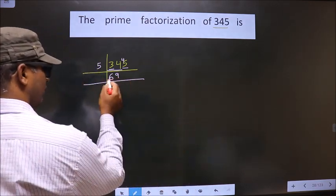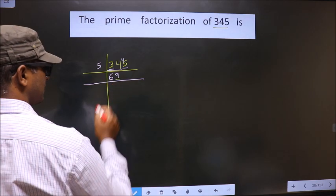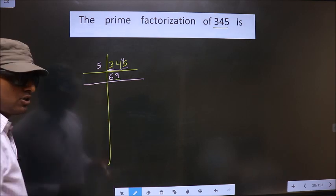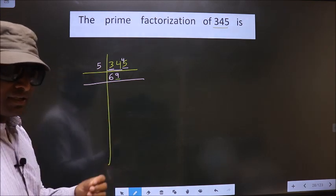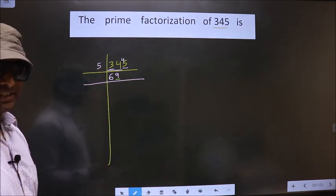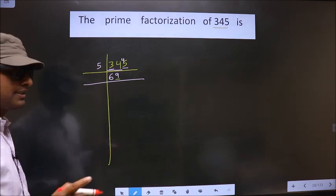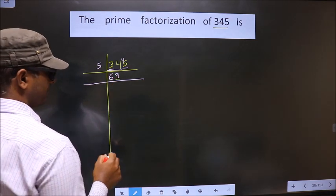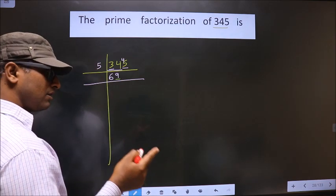Now for this number, the last digit is 9, which is not even, so this does not go in the 2 table. To check divisibility by 3, you should add the digits: 6+9=15. 15 goes in the 3 table, so this number also goes in the 3 table.